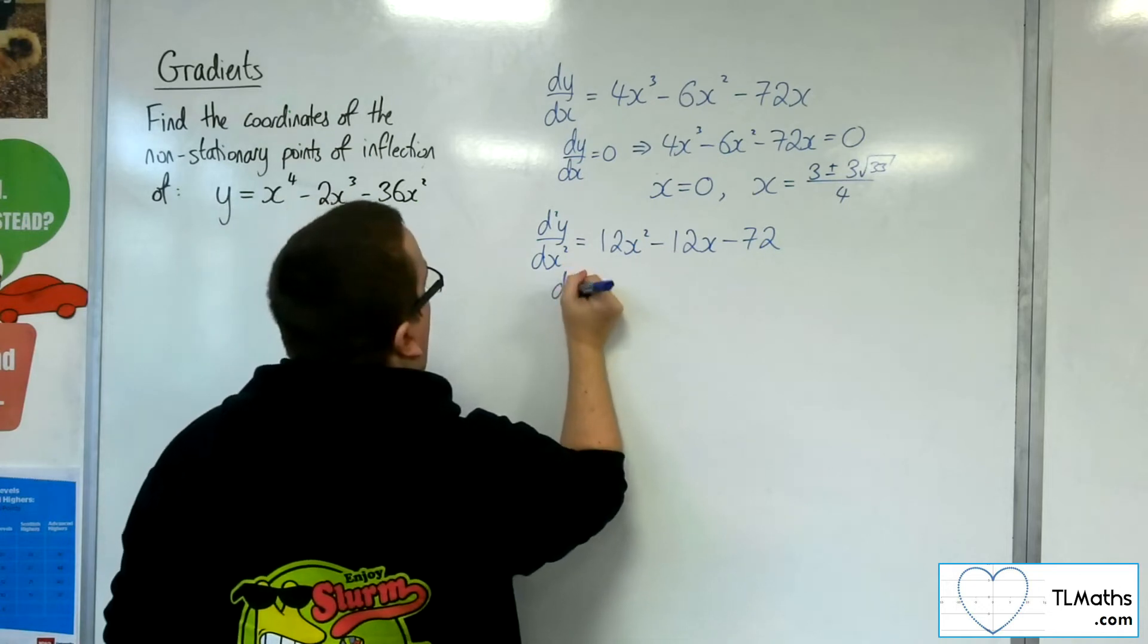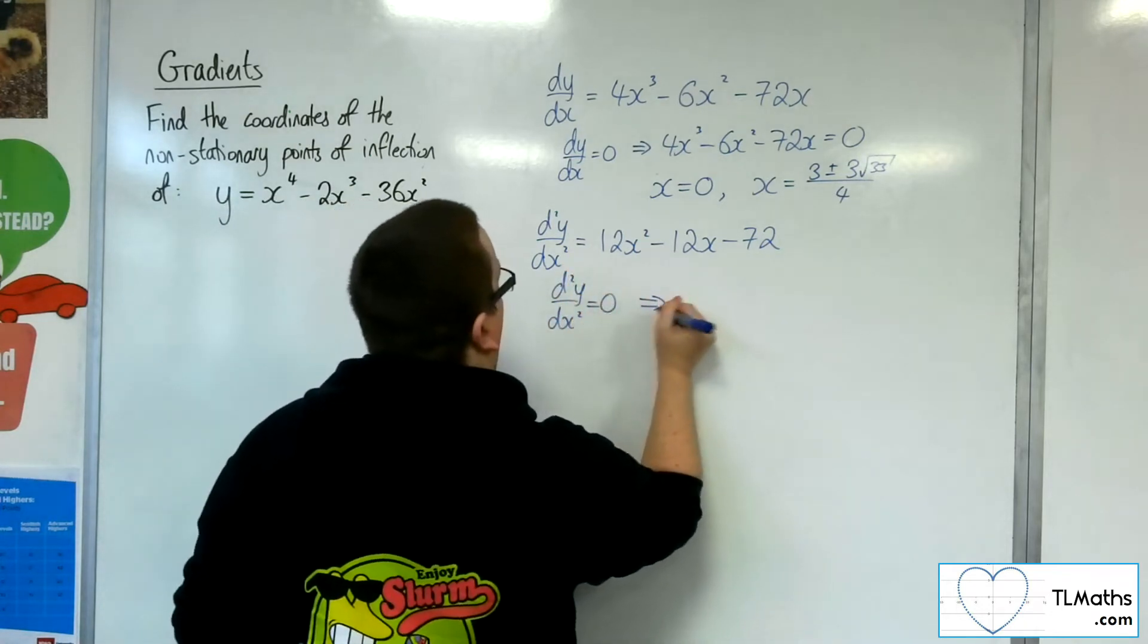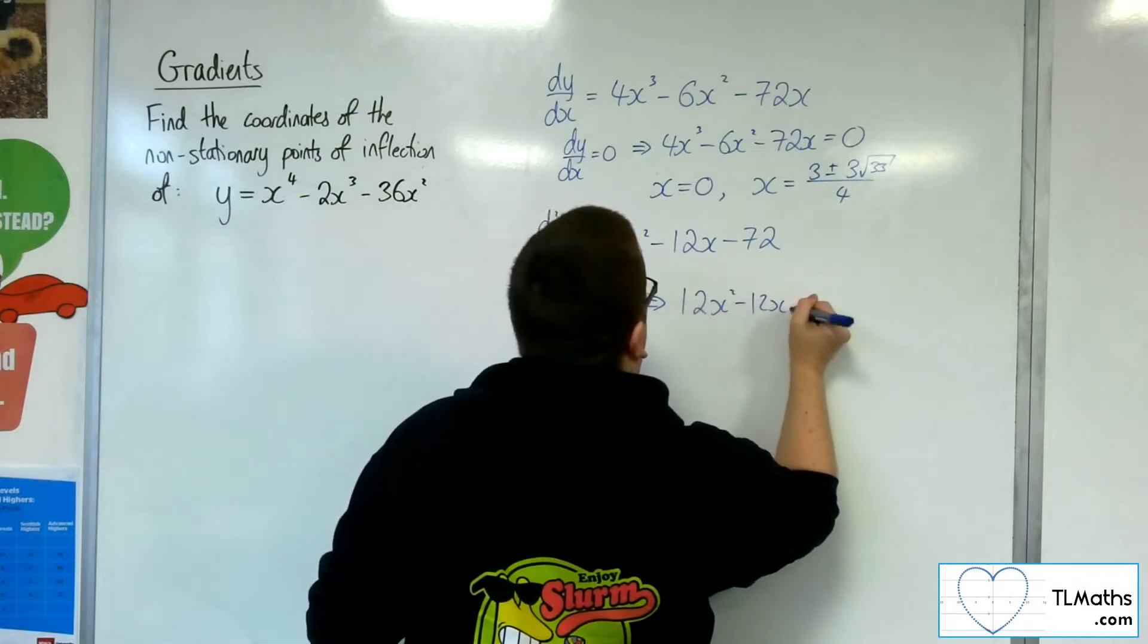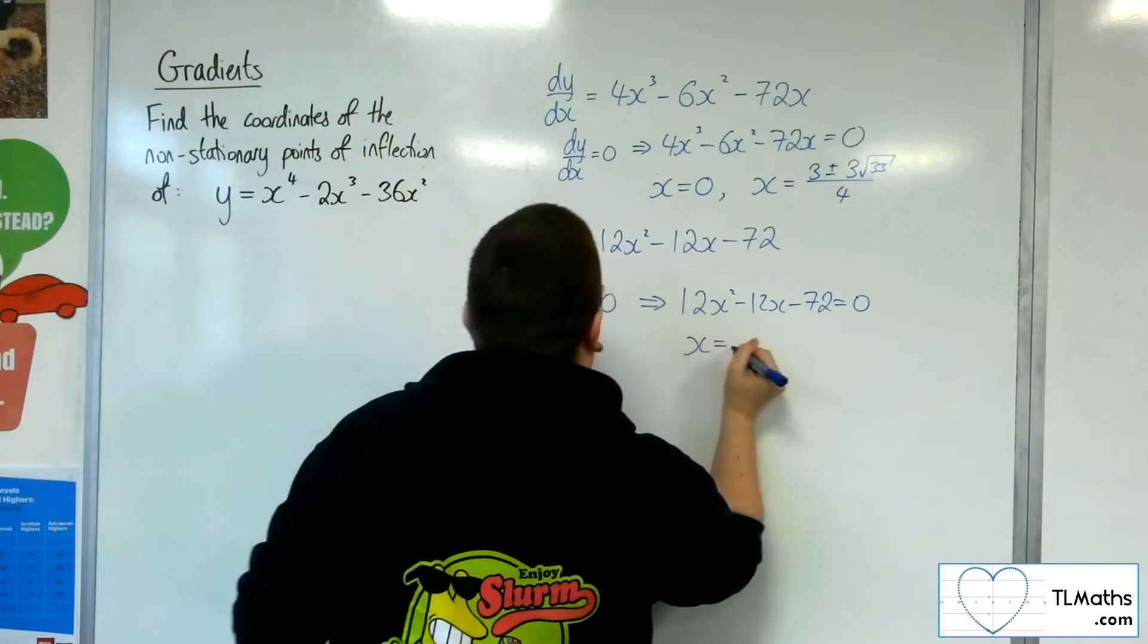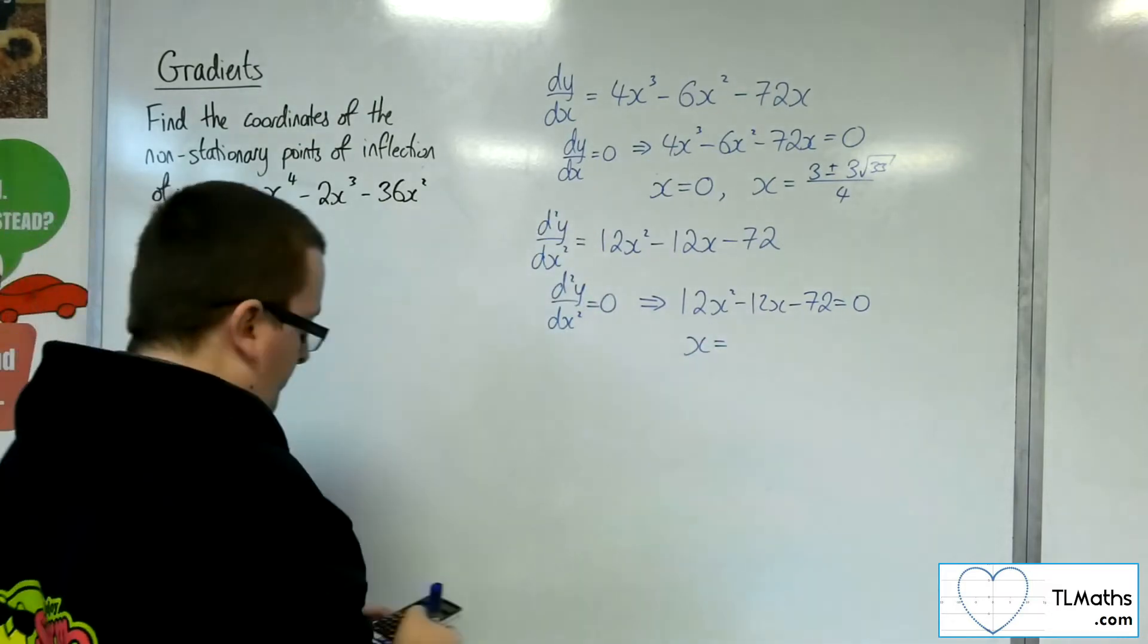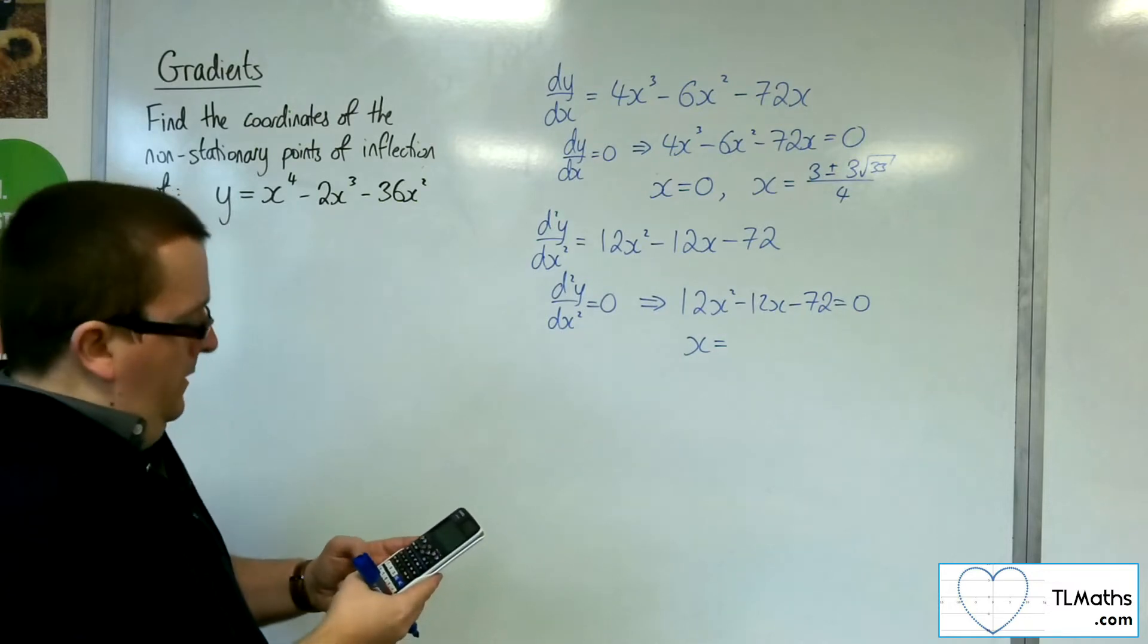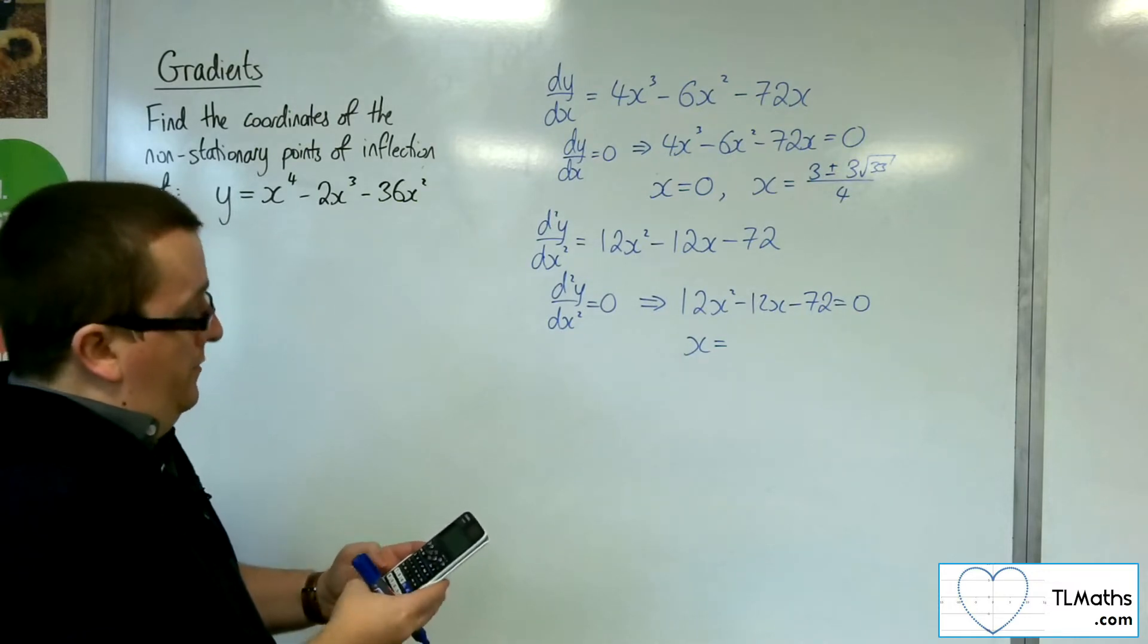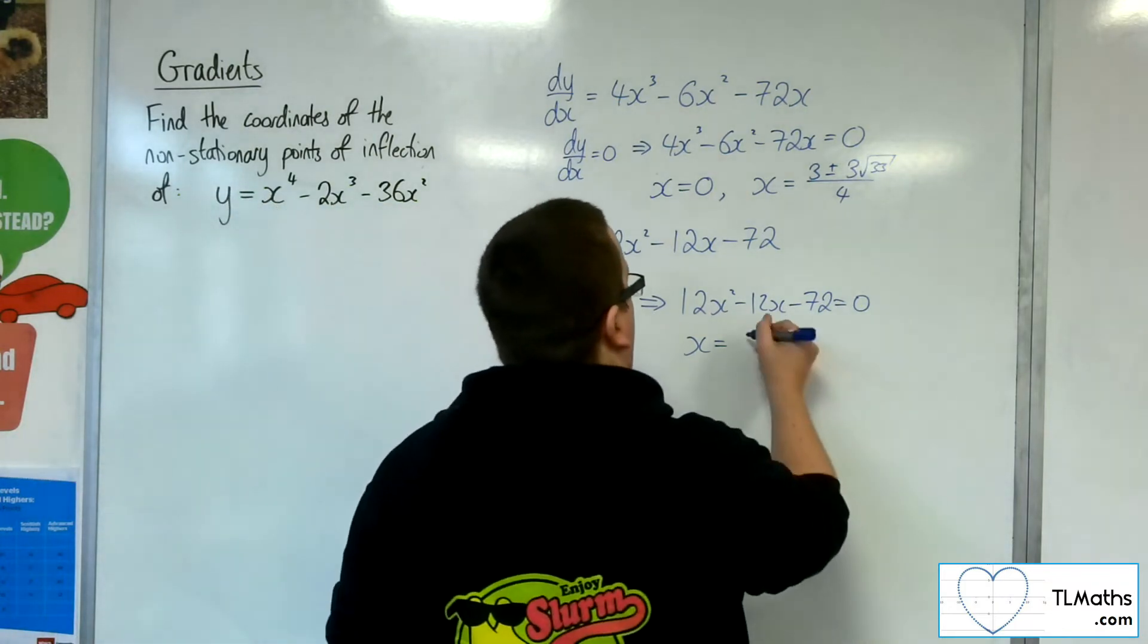So we want to put that equal to 0. So using the quadratic solver, 12 minus 12 and minus 72, we get 3 and minus 2.